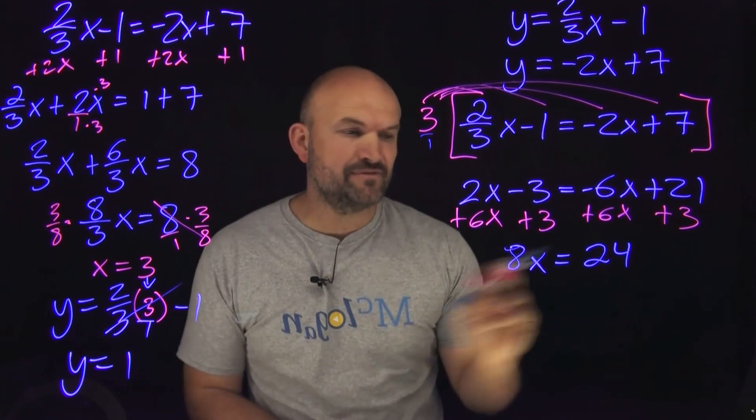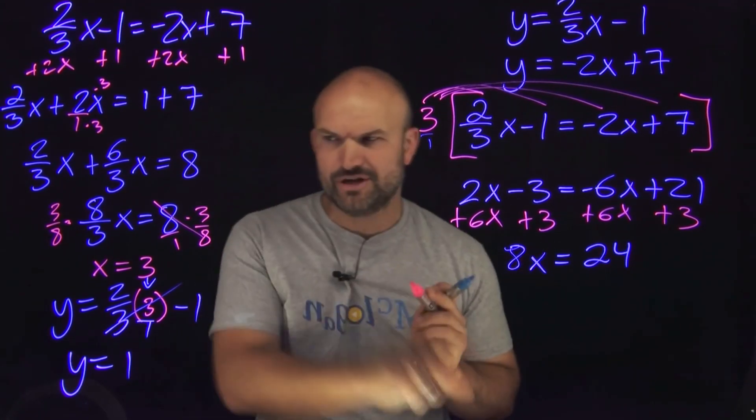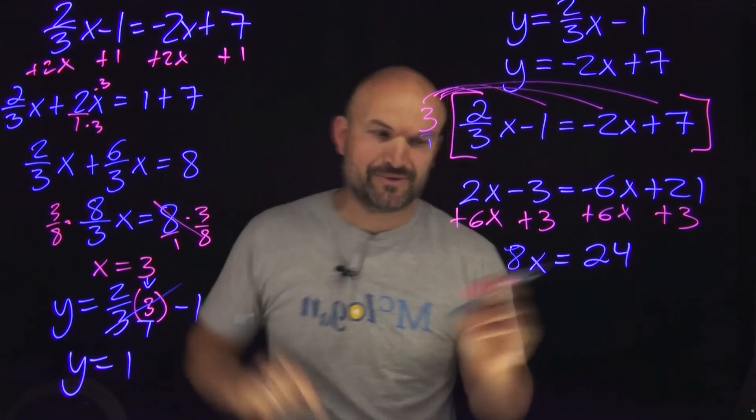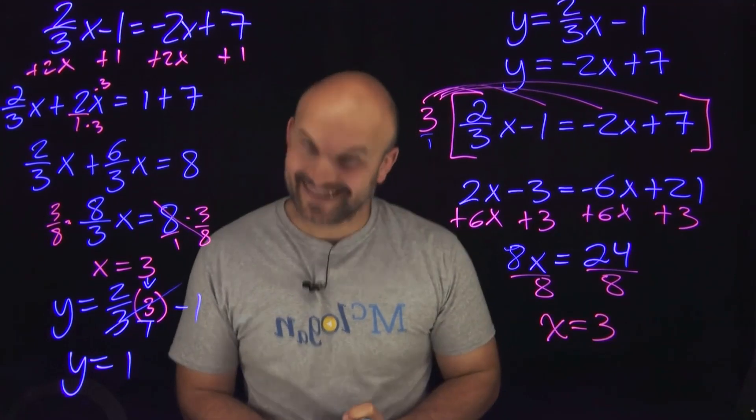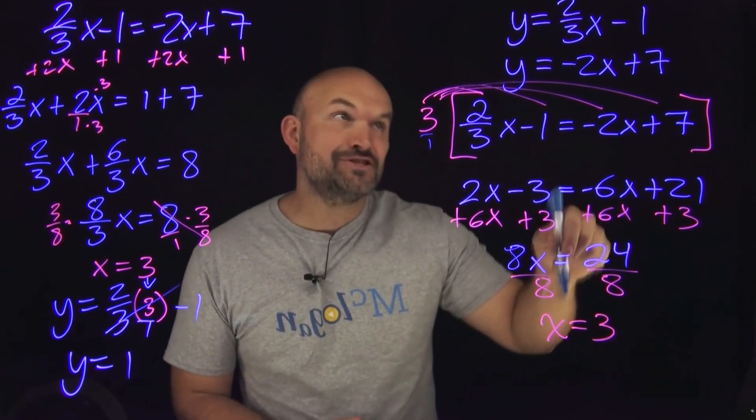And now I can just use my inverse operations to go ahead and solve for an x, which should be the exact same answer I had over here, which is a 3. It is. And then again, I have this 3.